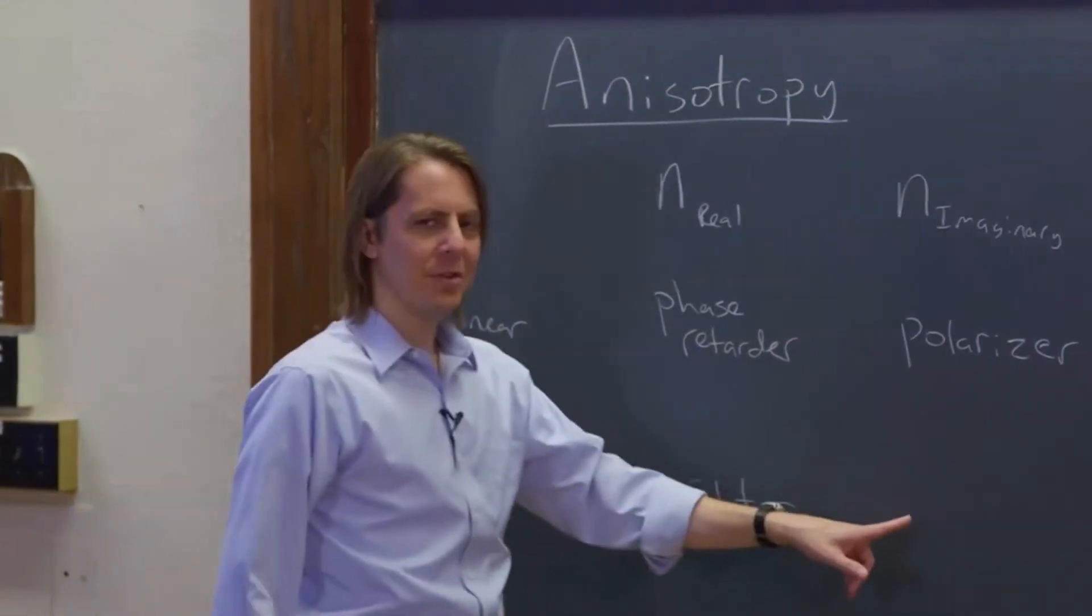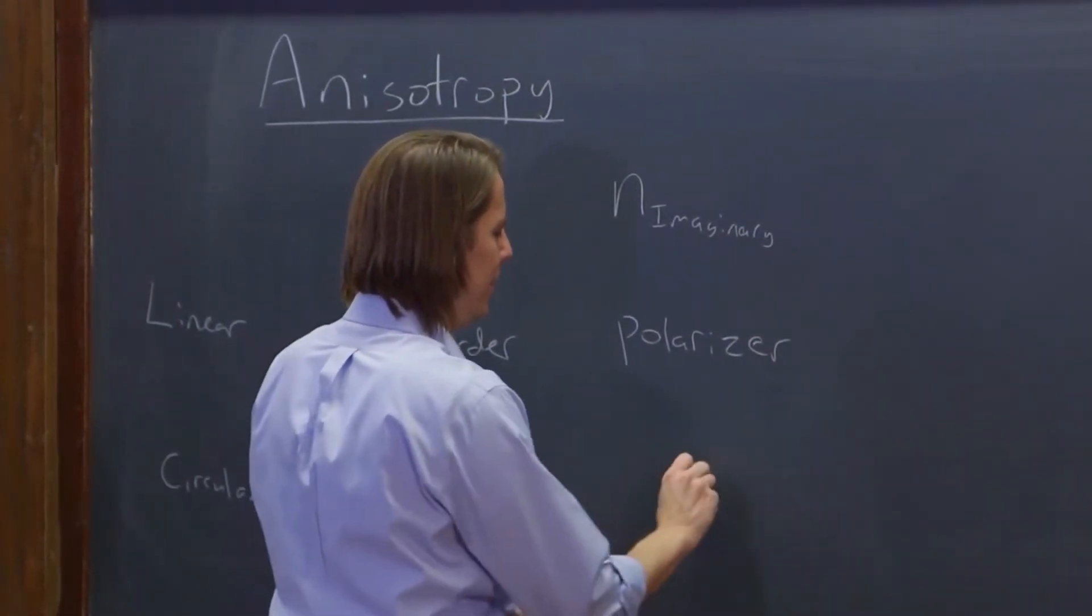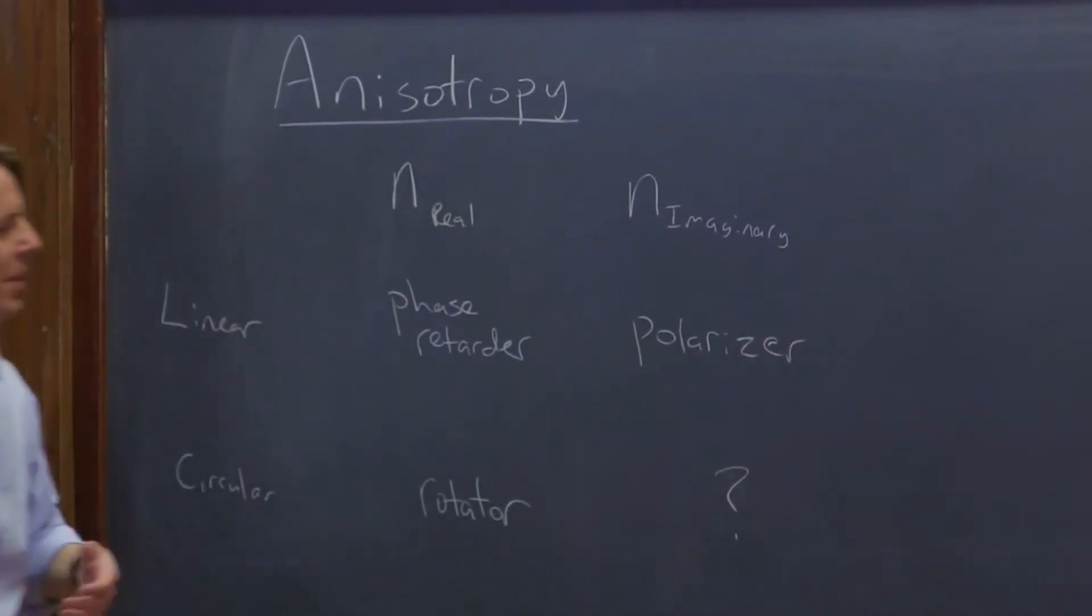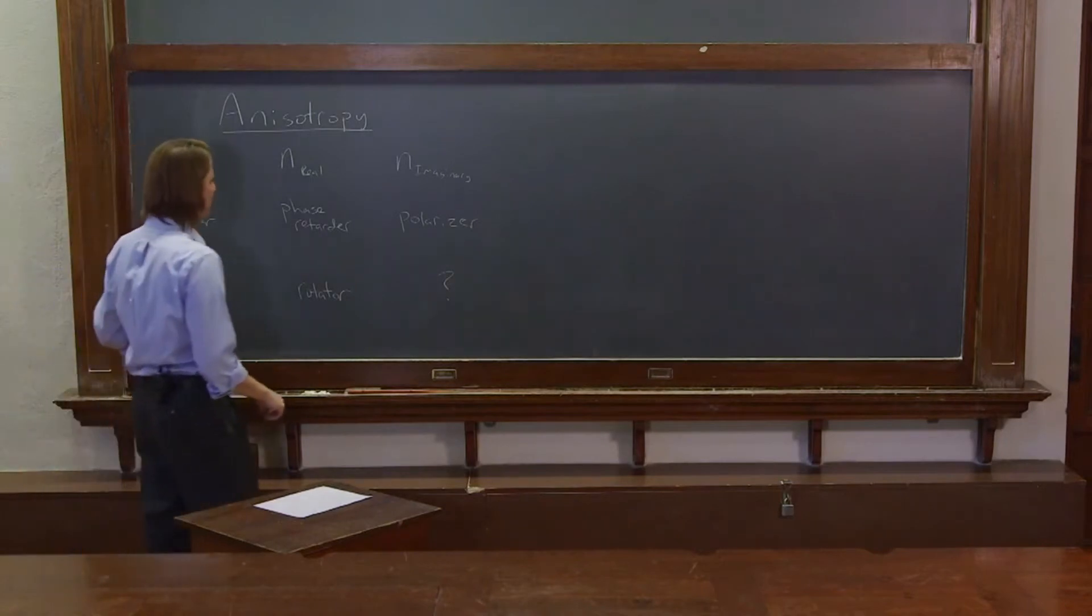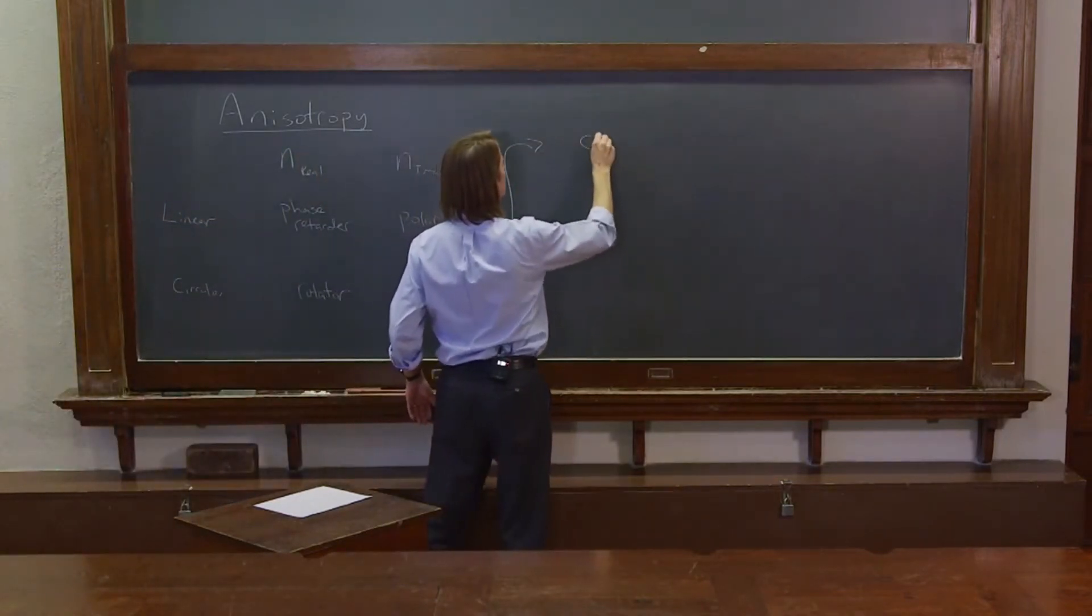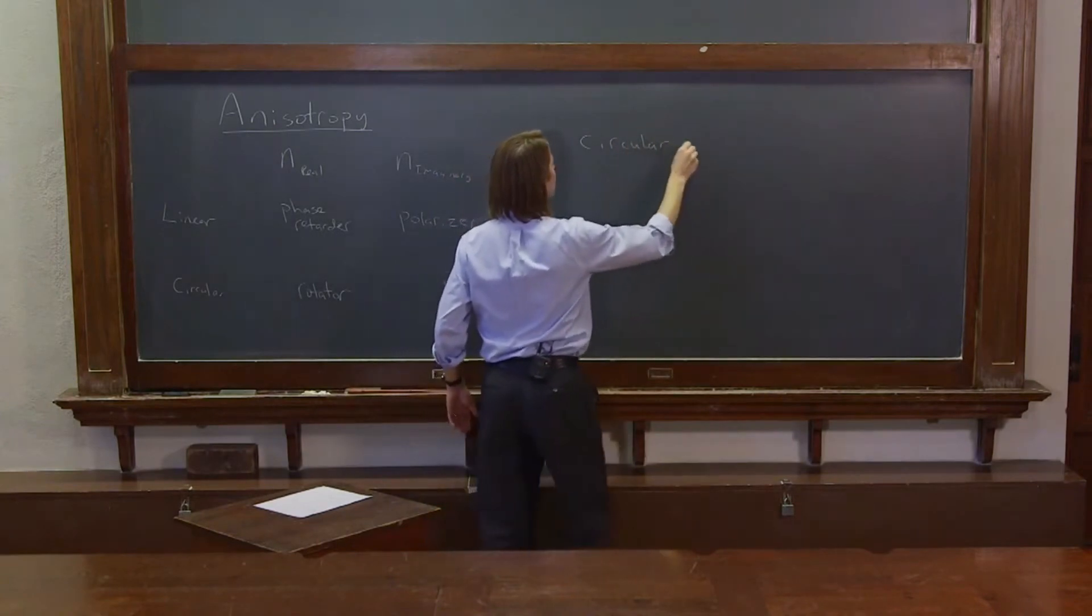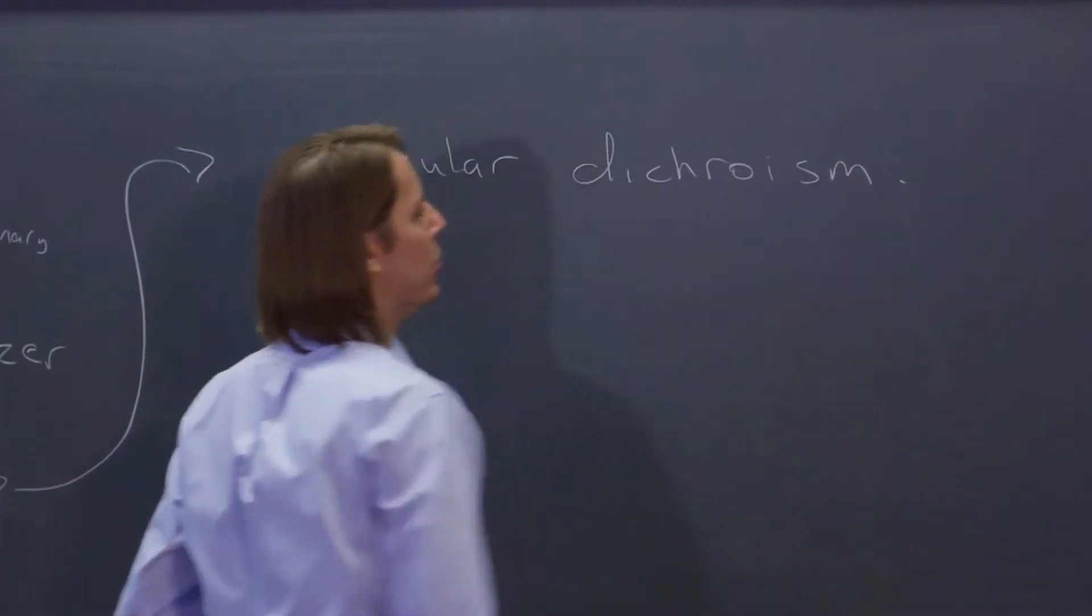So the question, we haven't done this one, what goes here? What is this here? Is it an optical element? Well, not really. We can sit here and say what it is. It must be circular dichroism.